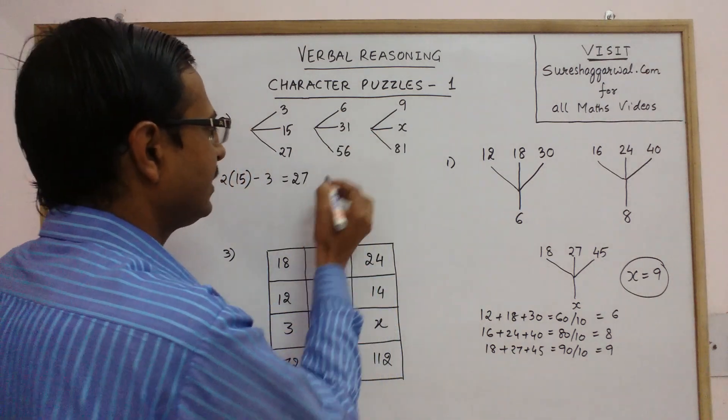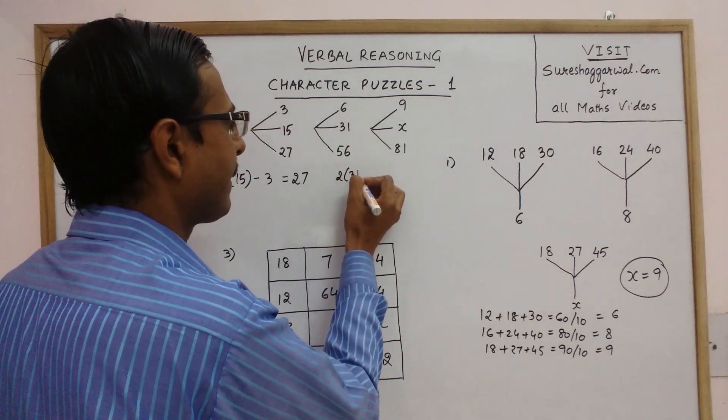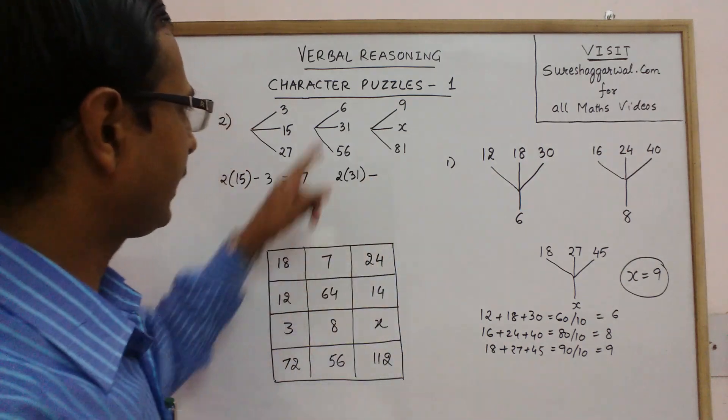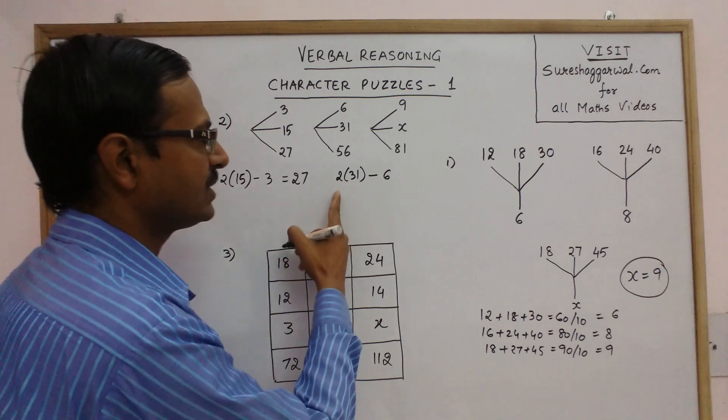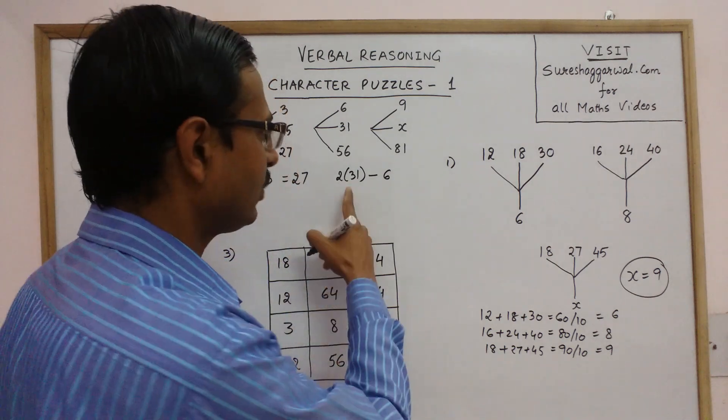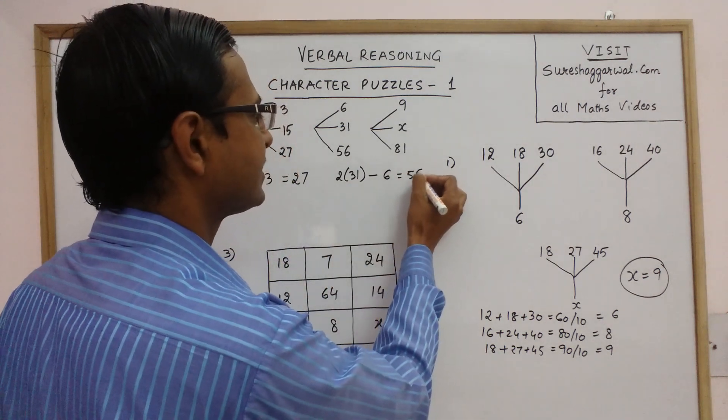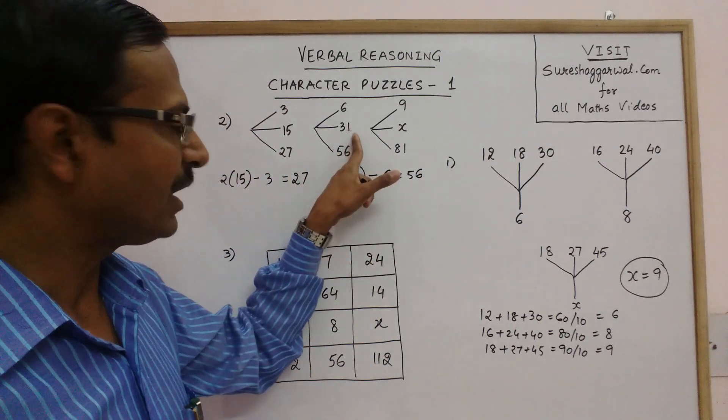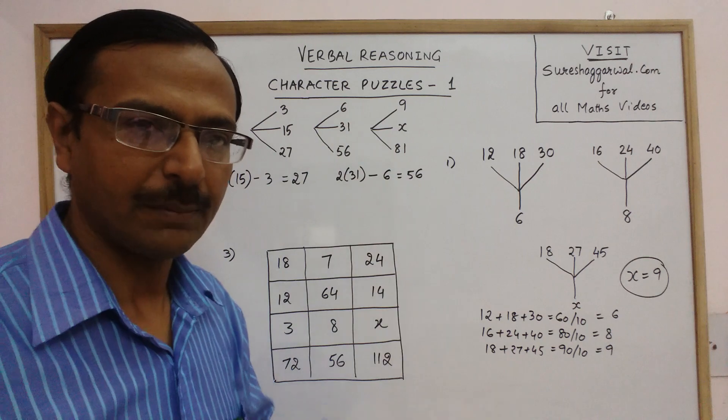So if you check here, double of 31 minus the upper number is 6. Let us check now, this is 62. So 62 minus 6 is again 56. So we are obtaining the lower number by doubling the middle number and subtracting the upper number.